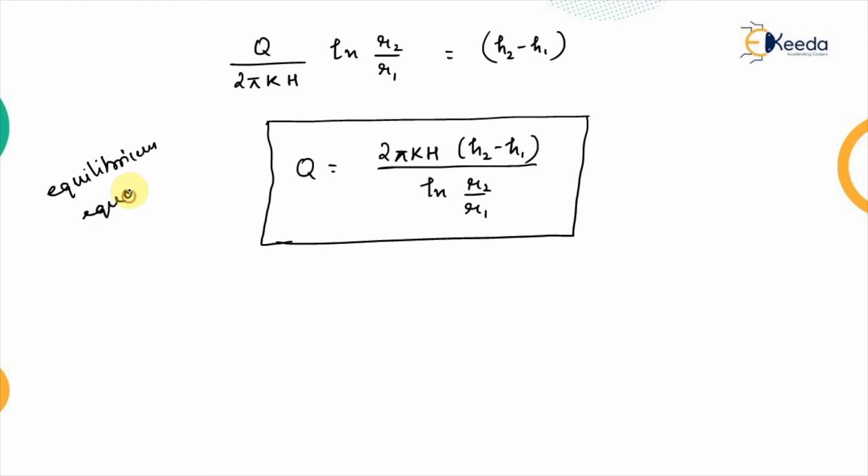This is the equilibrium equation for steady flow that means the properties are not changing as the time progresses. So, this is the equilibrium equation.